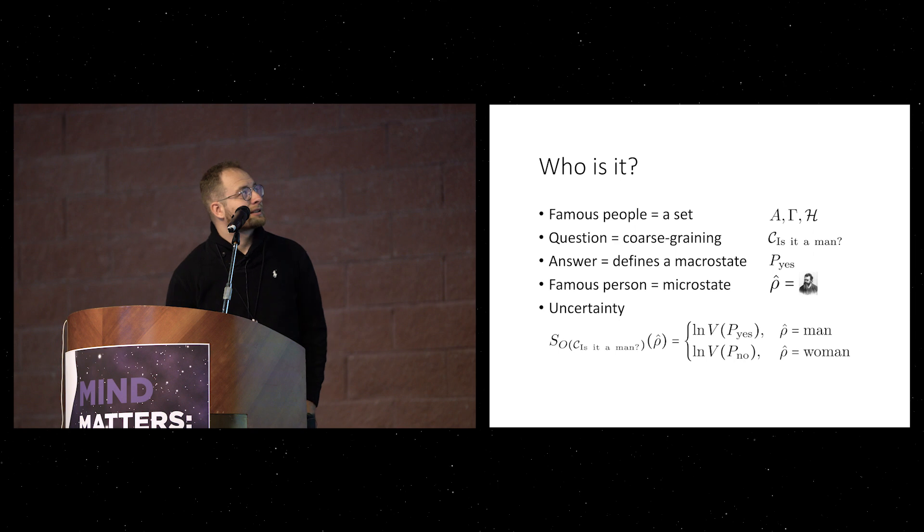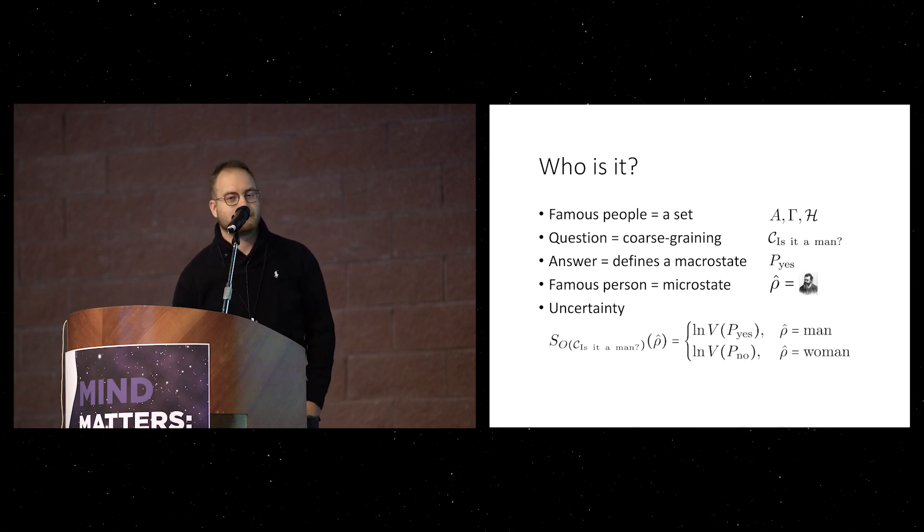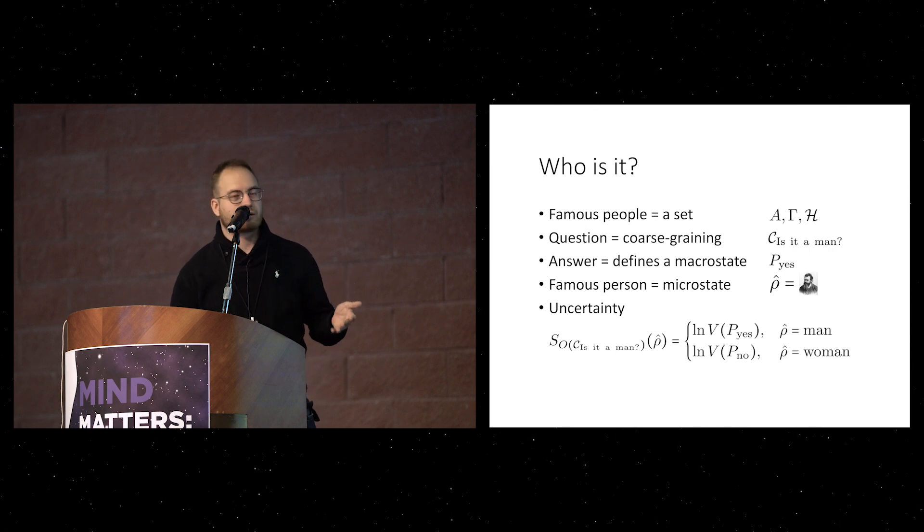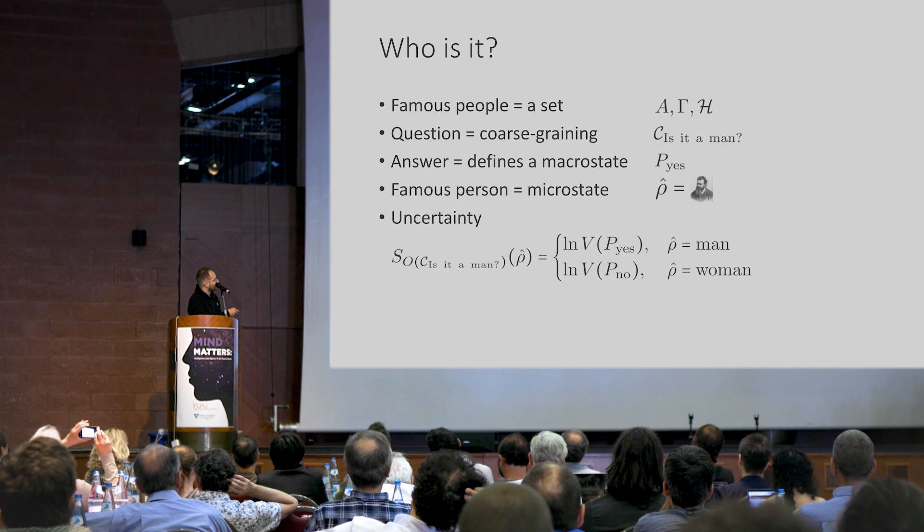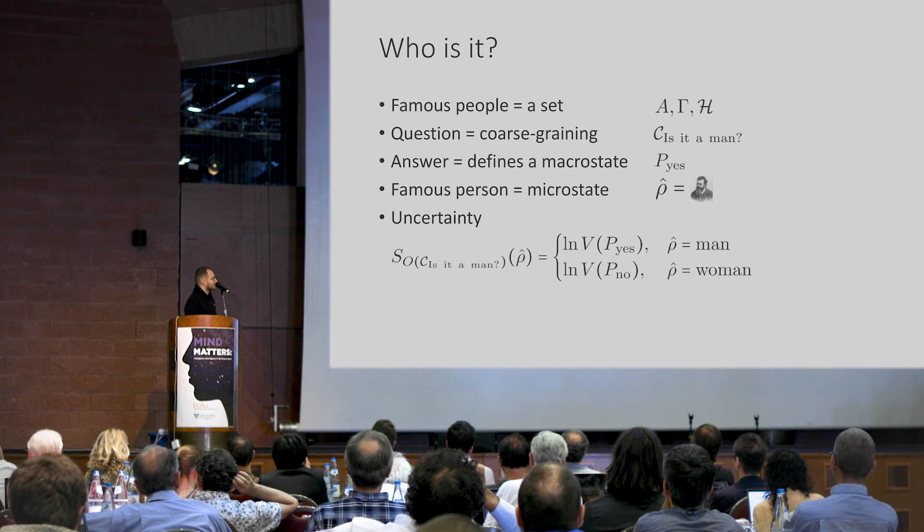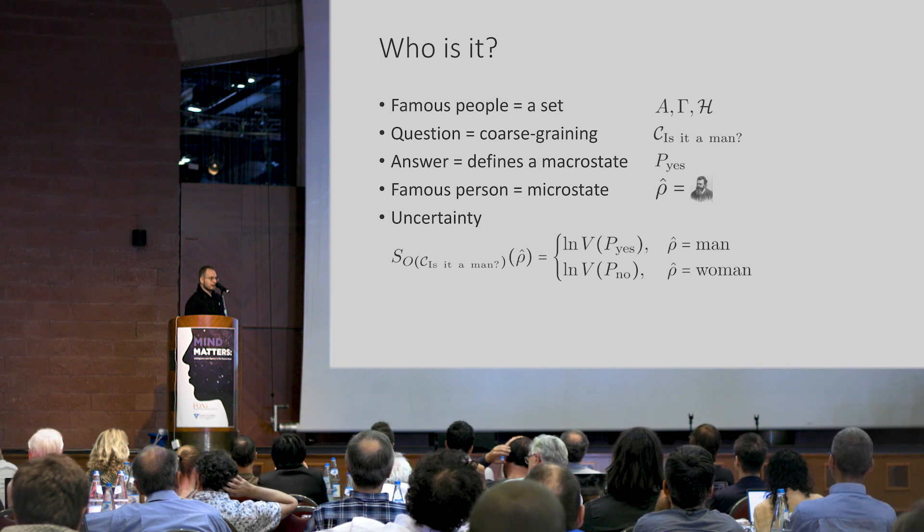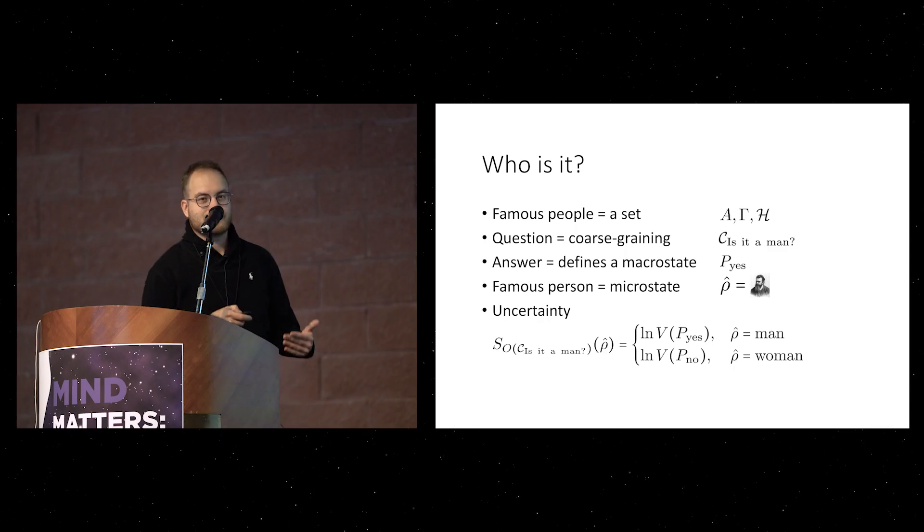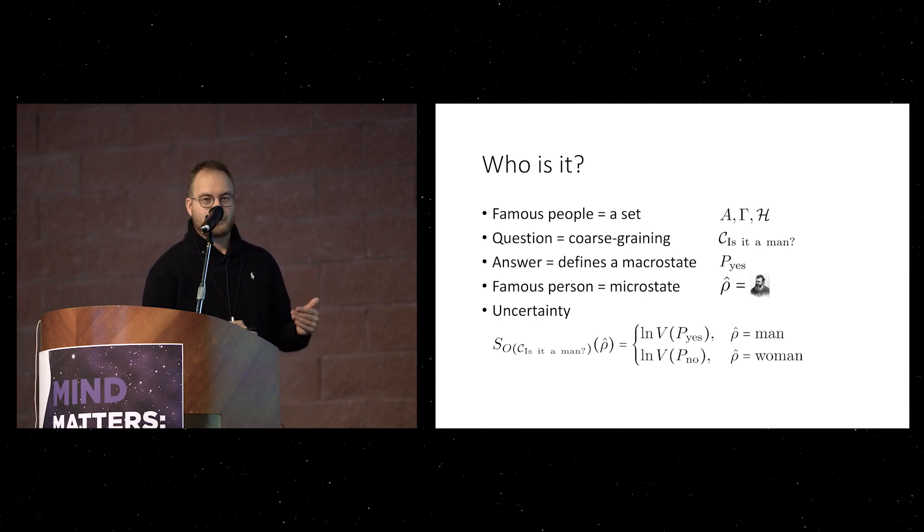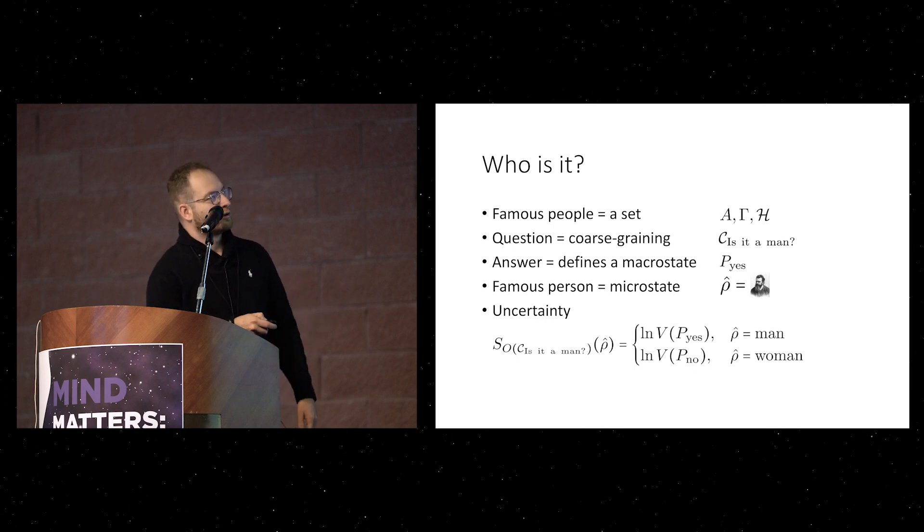So now let's talk about the mathematics. So what I introduce is a set, which is a set of famous people that we agreed on is the set that we talk about. So generally this can be some set, or in physics we use phase space or Hilbert space. And the question you were asking represents coarse graining. It is basically a collection of possible answers I could give you that reduce the set to something you have less uncertainty about. And the answer defines a macro state. So if I say yes, then that's a part of the Hilbert space, generally the set that I talk about. And the person I think about is a microstate that was Ludwig Boltzmann.